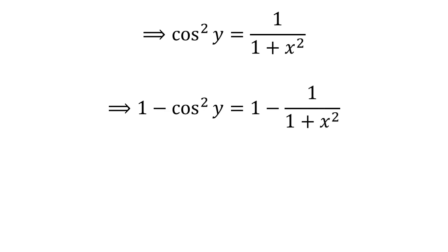Multiplying both sides by minus 1 and adding 1 to both sides gives us 1 minus cosine squared of y is equal to 1 minus 1 divided by 1 plus x squared.